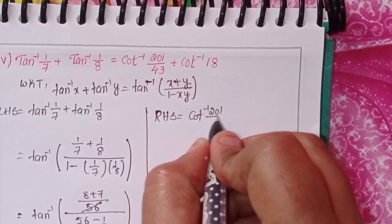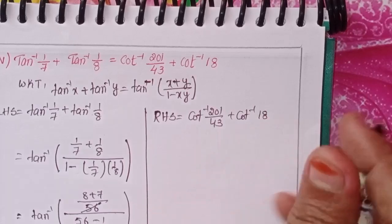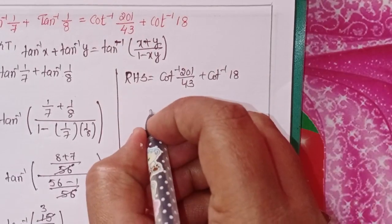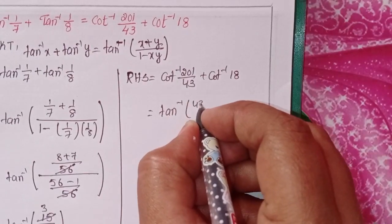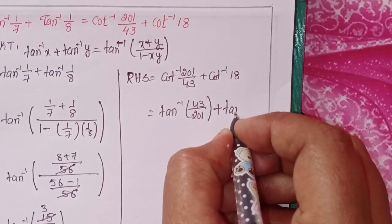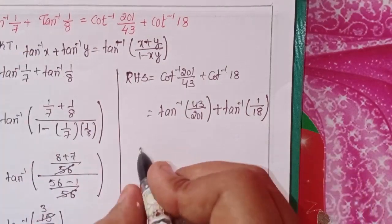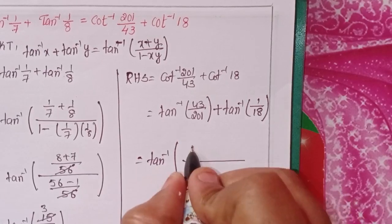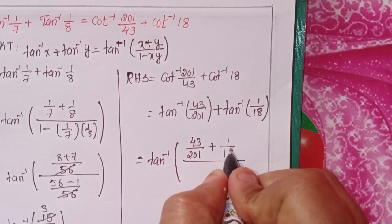Next, RHS: cot inverse 201 plus cot inverse 18. We don't have a cot formula, so we convert: cot inverse x equals tan inverse of the reciprocal. So this becomes tan inverse 1 by 201 plus tan inverse 1 by 18. Now apply the addition formula.